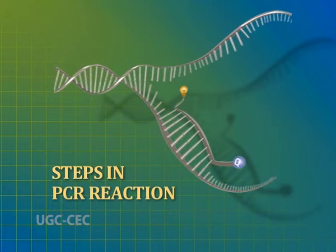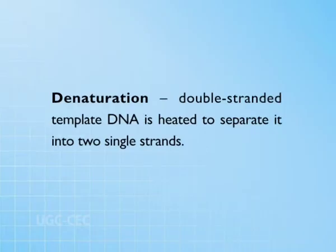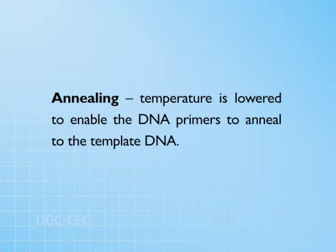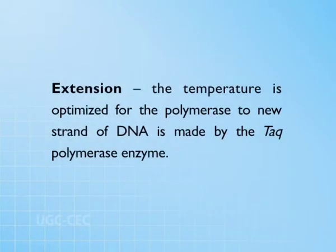Let us talk about the steps in PCR reaction. In the first step, known as denaturation, double-stranded template DNA is heated to separate it into two single strands. In the second step, called annealing, the temperature is lowered to enable the DNA primers to anneal to the template DNA. In the third step, called extension, the temperature is optimized for the polymerase to synthesize new strands of DNA, which is carried out by the Taq polymerase enzyme. These three steps are repeated 20 to 40 times, doubling the number of DNA copies each time, leading to production of millions of amplicons in a short duration.